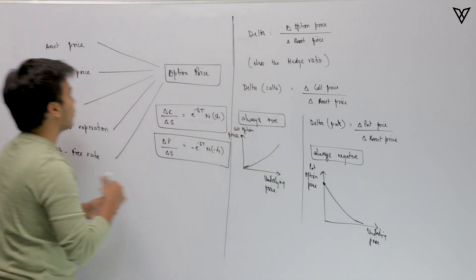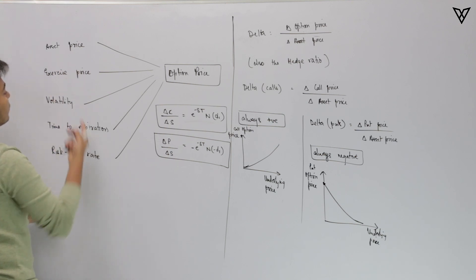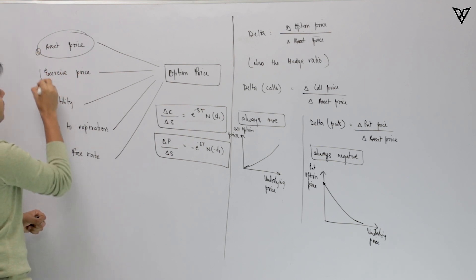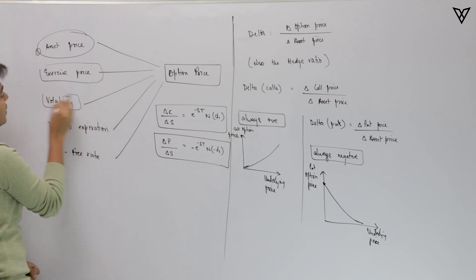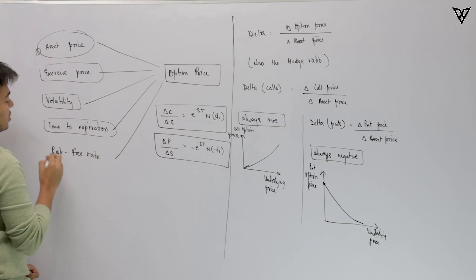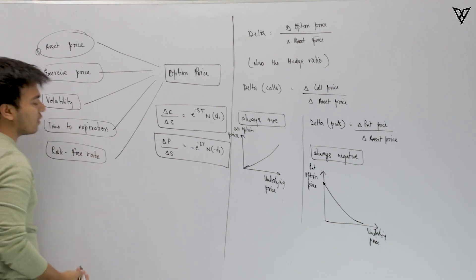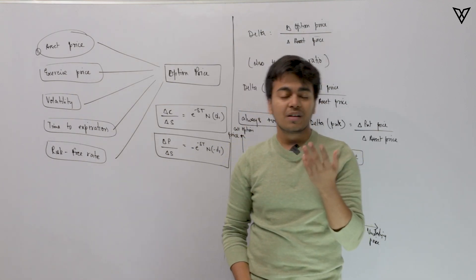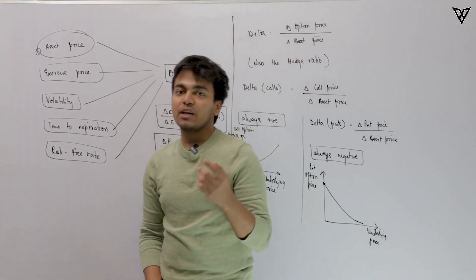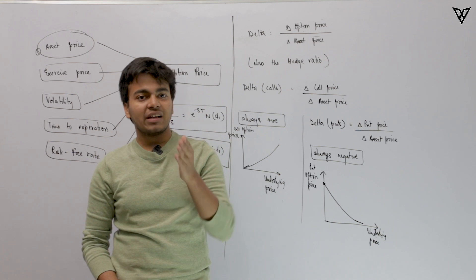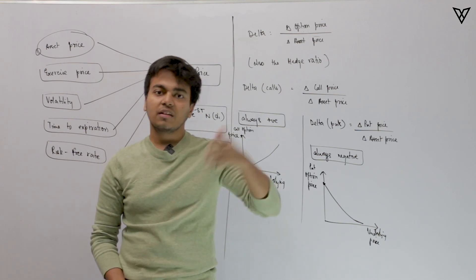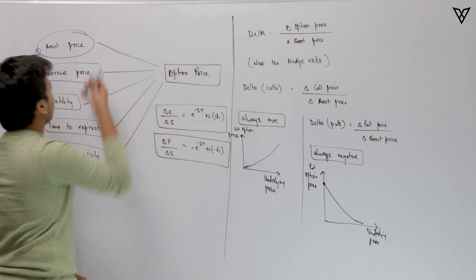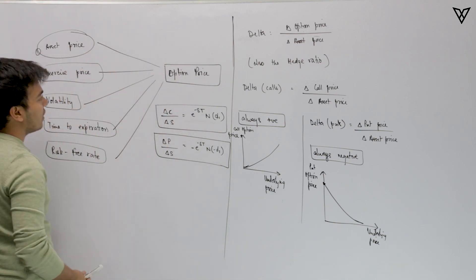We have already discussed a few of the factors which affect option prices. We have asset price being the first, exercise price being the second, volatility is the third, time to expiration is one factor, and risk-free rate is also one more. In case you find difficulty remembering, just recall your BSM model — in that you have D1, and D1 has all these factors that really affect your option price.